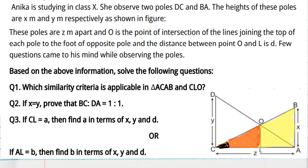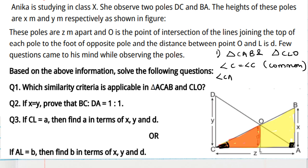Angle C is common in both triangles. For question 1, consider triangle CAB and triangle CLO. Angle C is common in both. Since these are poles, they will be perpendicular to the ground, so angle CAB equals 90 degrees. Similarly, since OL is given as a height, angle CLO is also 90 degrees. Therefore, triangle CAB is similar to triangle CLO by AA criteria.